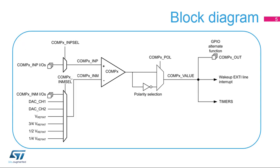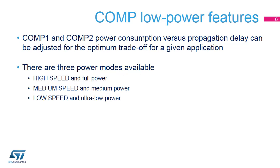This slide shows the general block diagram of the comparator integrated in the device. The comparator's power consumption can be adjusted to have the optimum trade-off between speed and energy efficiency for a given application. There are three modes available: high-speed, medium-speed, and ultra-low-power.